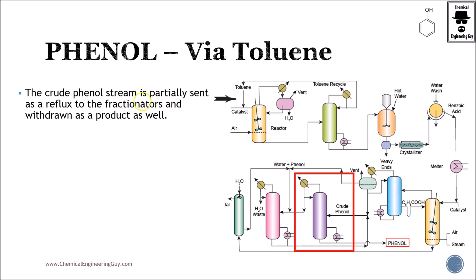The crude phenol stream is partially sent as reflux to the fractionators and withdrawn as product. In this fractionator we have a lot of phenol plus water and phenol. We can now remove this as our final product. Note that we cannot do this straightforwardly because we need a recycled stream, which is formed from and depends on this unit and this unit.